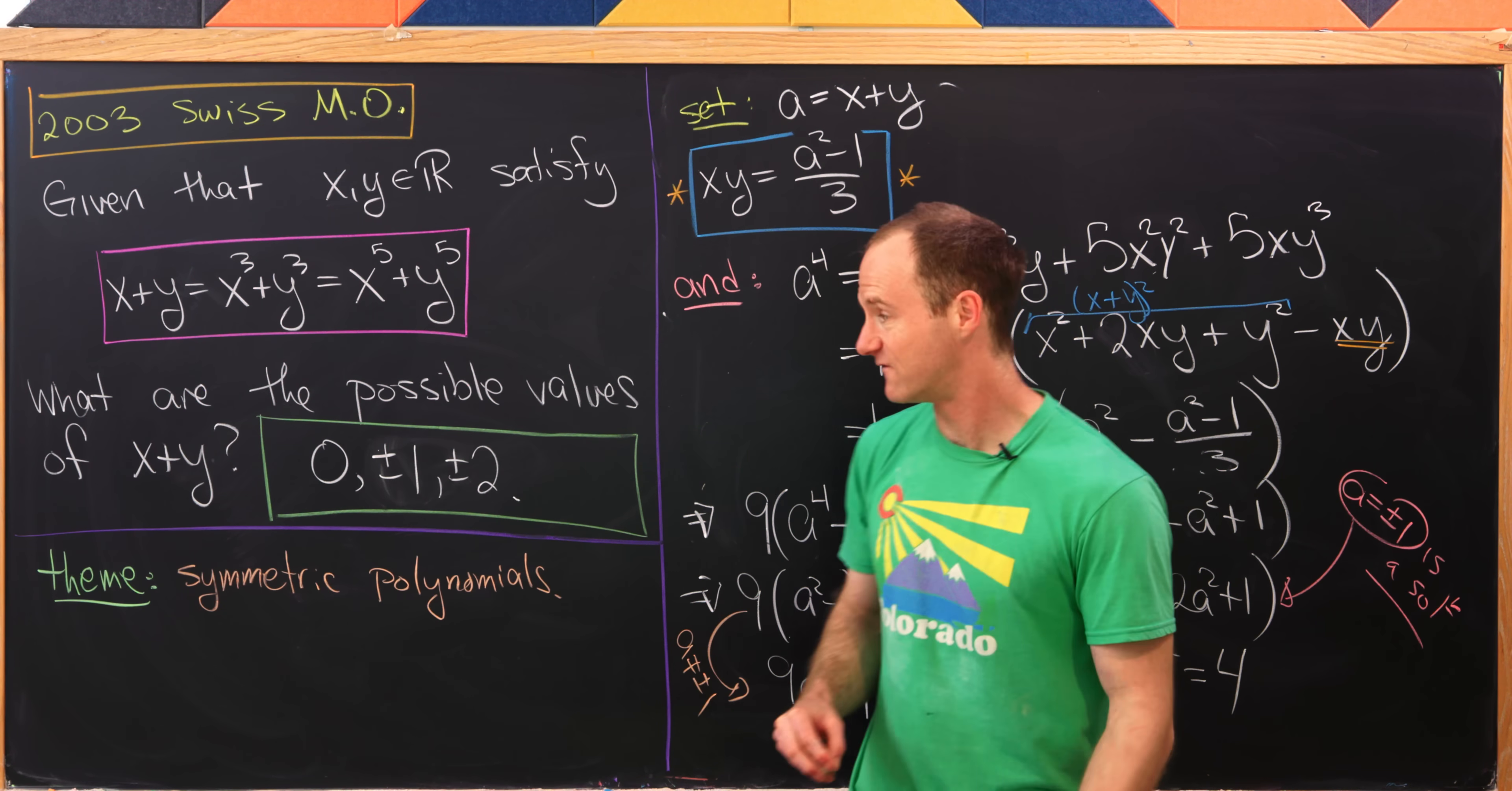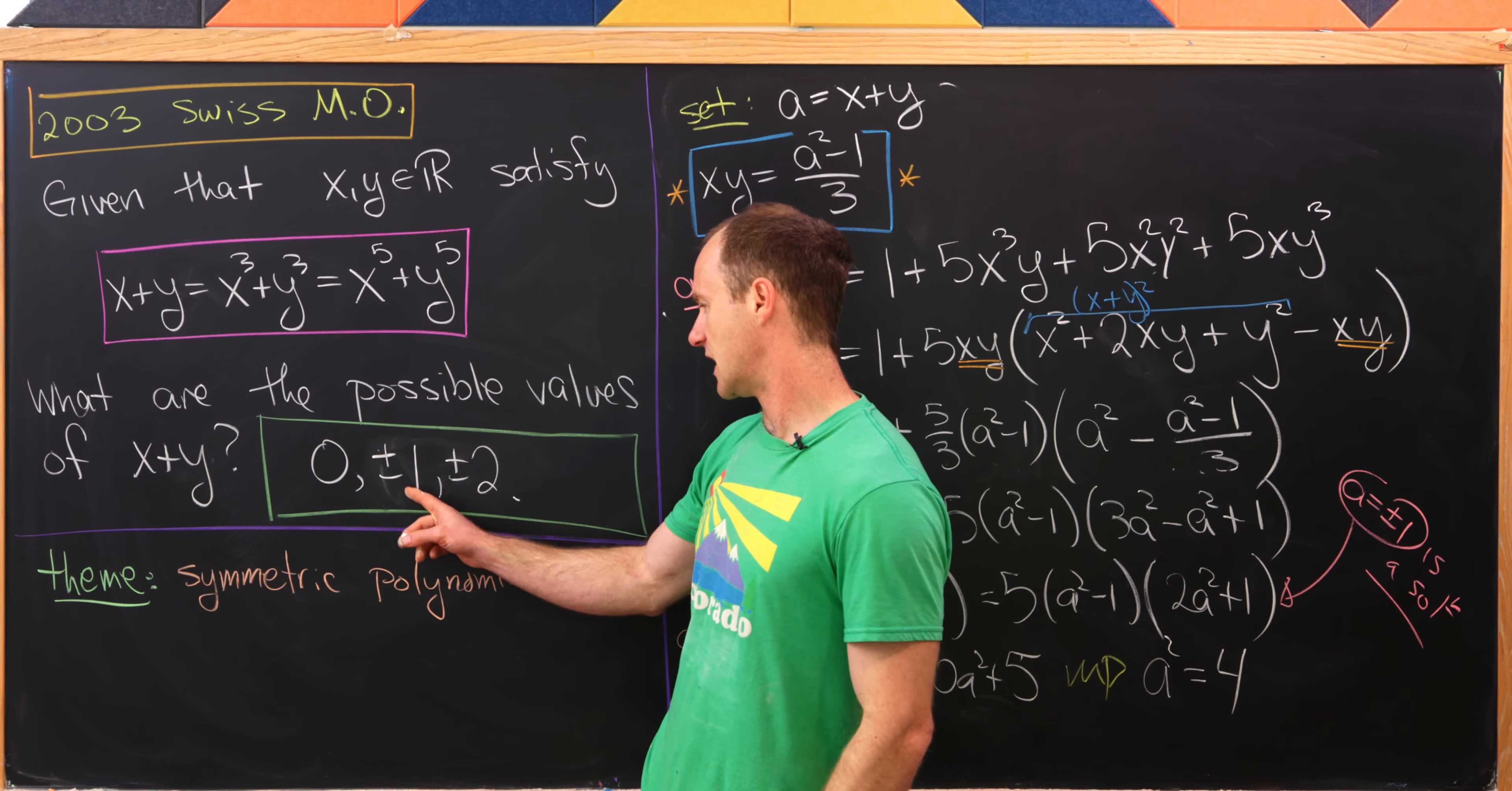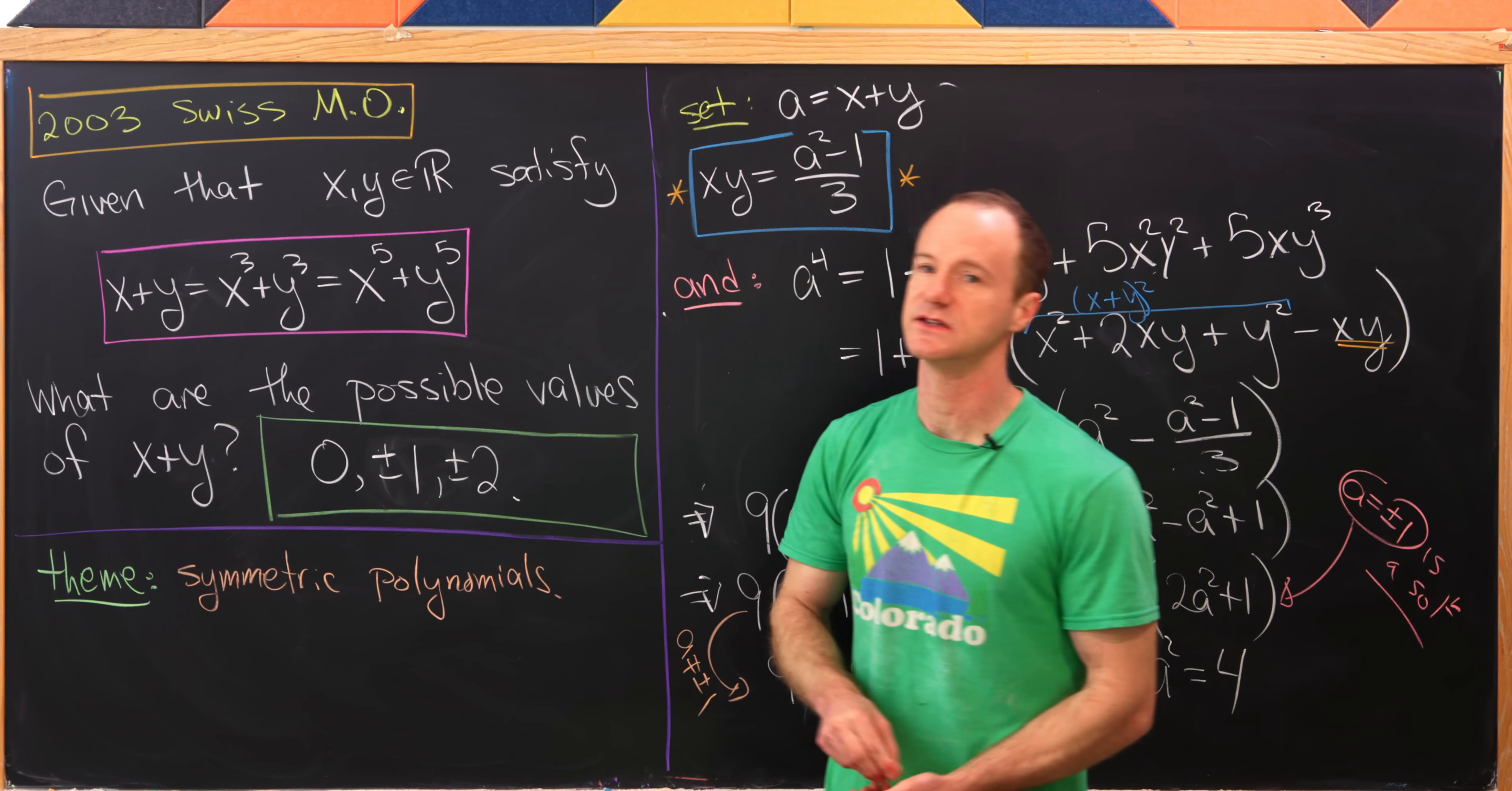And there we have it. We, in total, have 5 different solutions: negative 2, negative 1, 0, 1, and 2.